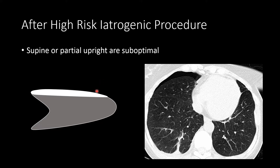Realize that a supine or partial upright radiograph is suboptimal. The gas can settle in the anterior chest wall, and when the radiograph is shot AP, we may not be able to detect the gas because there is no separation of the pleural surfaces in plane with the radiograph. So small pneumothoraces may settle anteriorly and may not be detected on supine or partial upright radiographs.